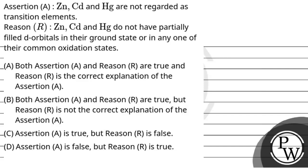Let's read the question. The question says: Assertion — zinc, cadmium, and mercury are not regarded as transition elements. Reason — zinc, cadmium, and mercury do not have partially filled d-orbitals in their ground state or in any one of their common oxidation states.